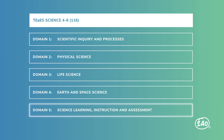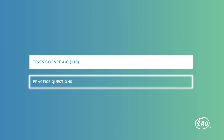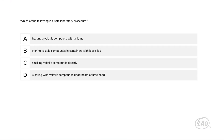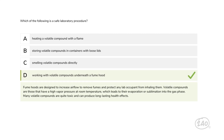Now that we've gone over some of the big concepts, let's look at some practice questions to show you how those concepts can appear on the test. Which of the following is a safe laboratory procedure? Many volatile compounds are quite toxic and can produce long-lasting health effects. Fume hoods are designed to increase airflow to remove fumes and protect any lab occupant from inhaling them — so this is the best answer.